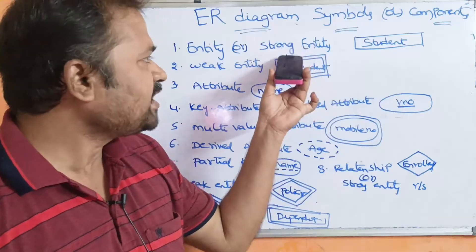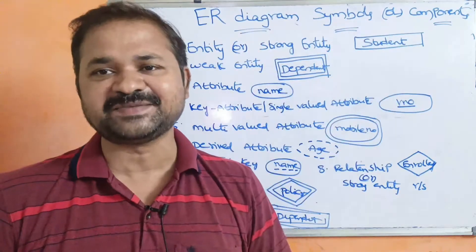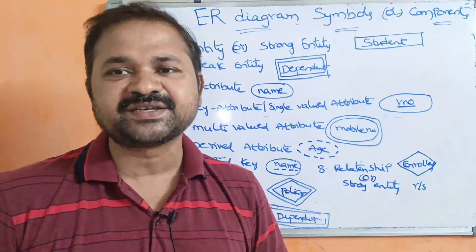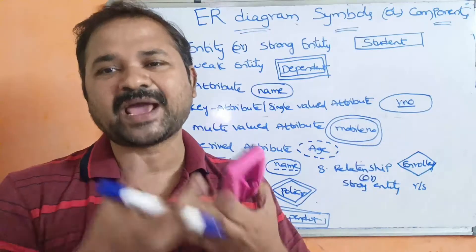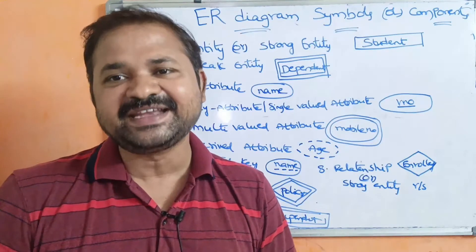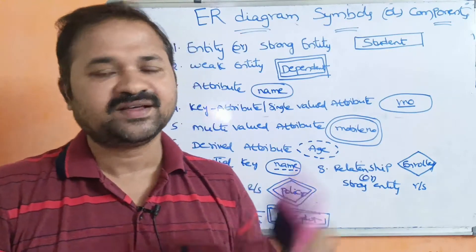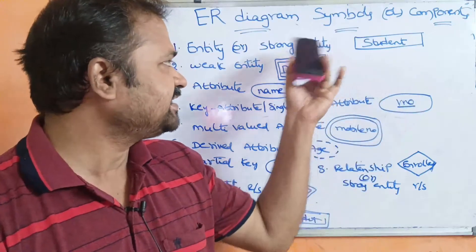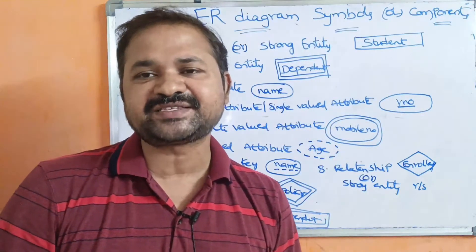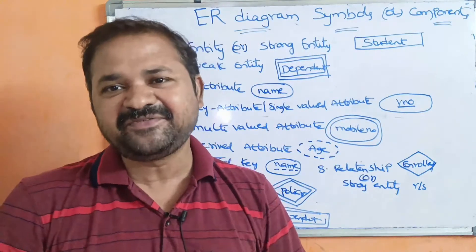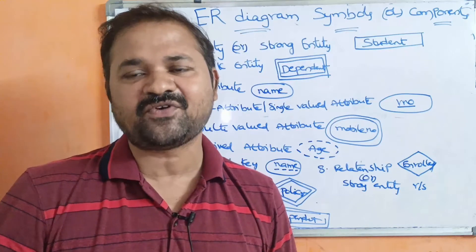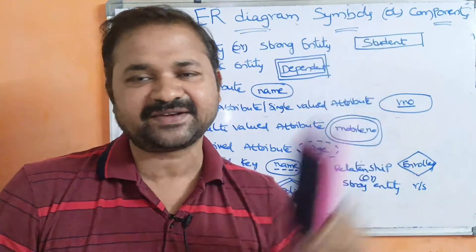For a strong entity, we also use a rectangle symbol. Strong entity means that entity uses a primary key. If an entity contains a primary key, then we can say it is a strong entity. A strong entity uses some key field — it may be a primary key or foreign key.